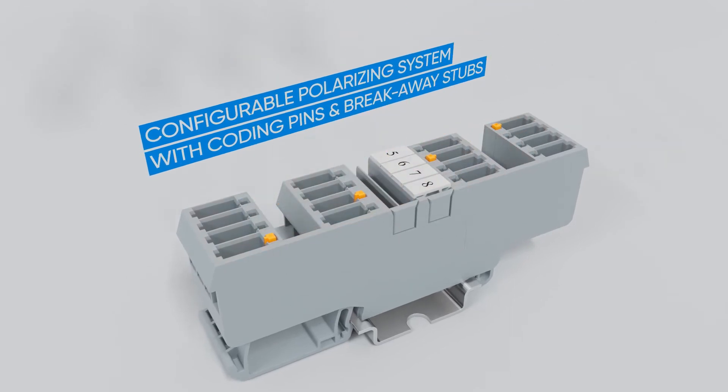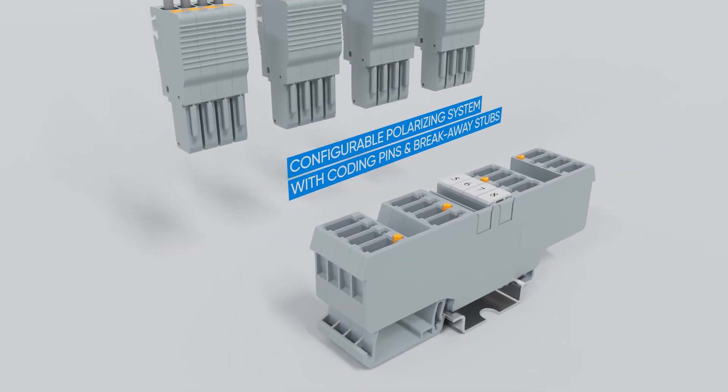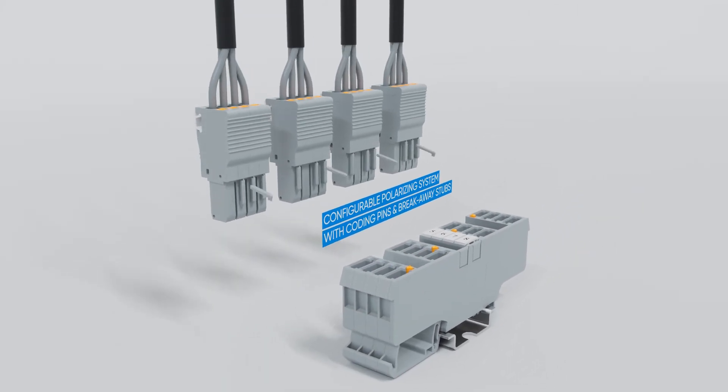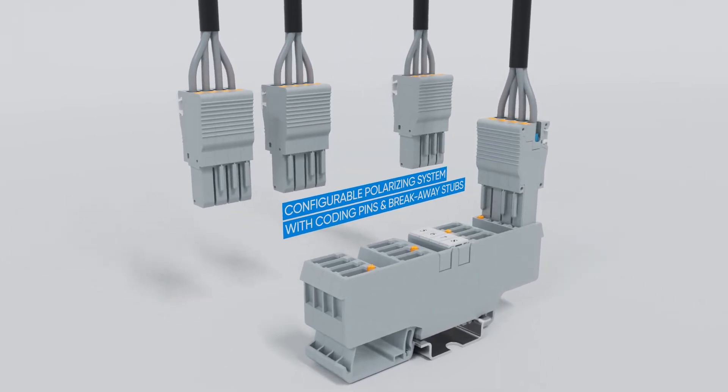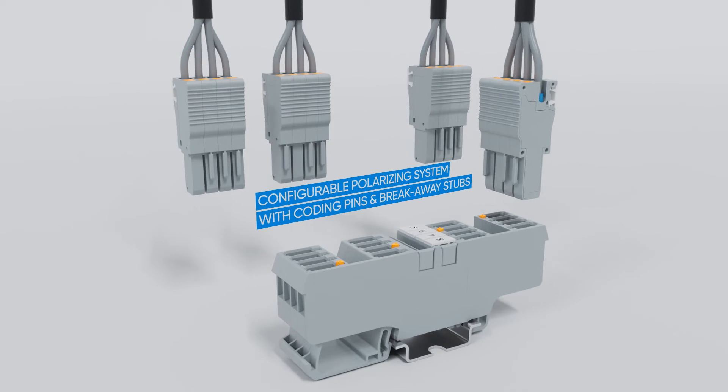A smart polarizing system allows coding pins to be inserted into the base assemblies, and the integral stubs can be appropriately cut in the plugs to completely avoid wrong connections and remove any chance of human error.